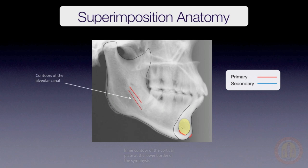Posteriorly, the mandible is superimposed on the contours of the alveolar canals, which are stable throughout growth. Remember, as many as four contours representing the right and left canals may be visible. Try to use the two most anterior or the two most posterior contours — the key is to use the same contours for both tracings.